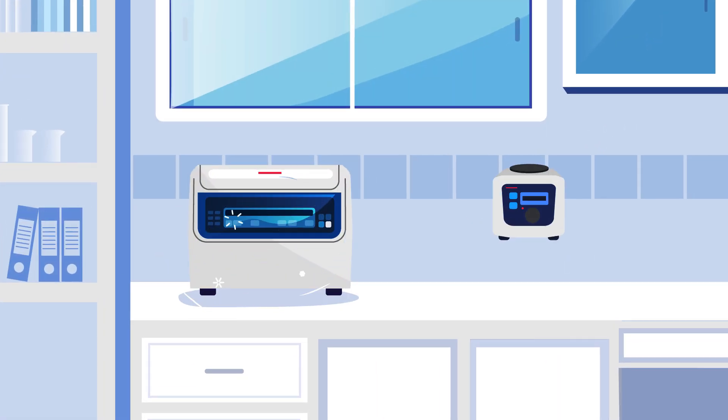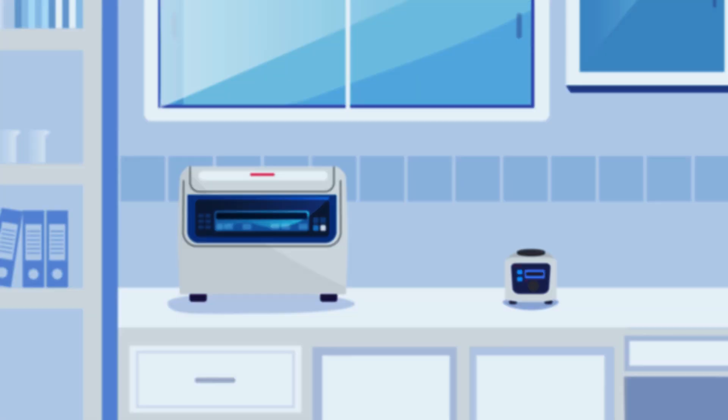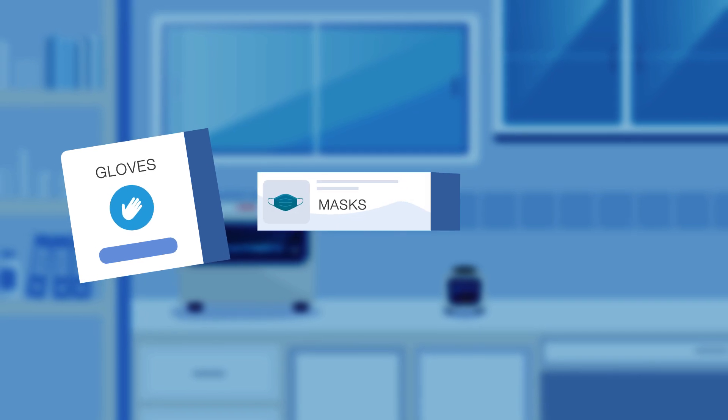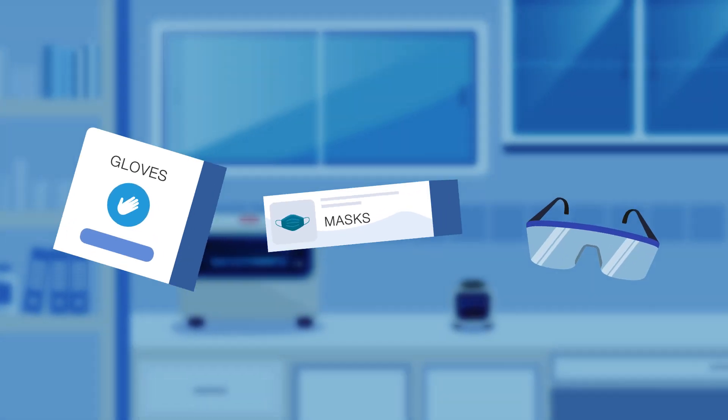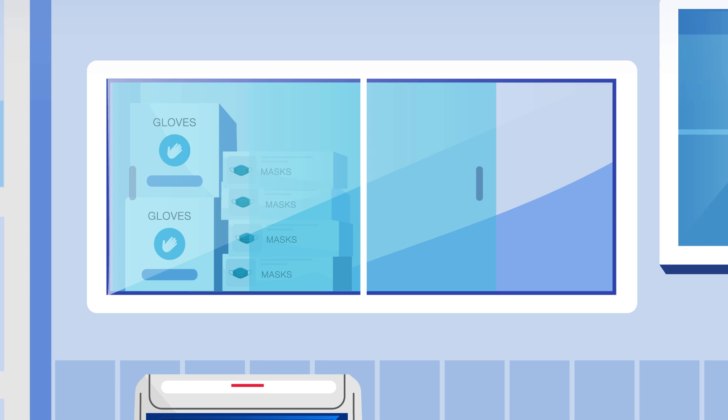Start by laying out your lab essentials in a logical workflow. Personal protective equipment like gloves, masks, and safety goggles should be readily accessible and properly stored.